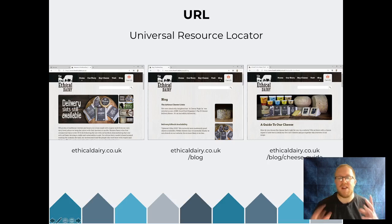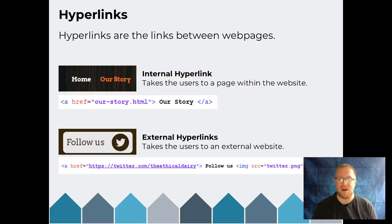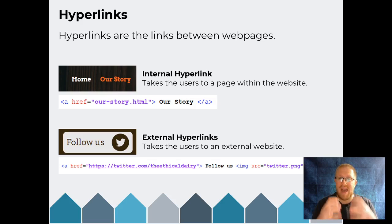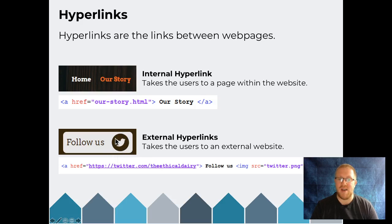The main ingredient of a website that links everything together is hyperlinks. Hyperlinks are the links between two or more pages, and there are two different kinds: internal and external. Internal hyperlinks take users to a page within your current website — for example, going from one page on the Ethical Dairy website to another page on the same site. External hyperlinks take you from your current website to a different website that you don't manage, such as going from the Ethical Dairy website to Twitter. Interestingly, an image can also be part of a hyperlink if the image is included inside the anchor tags.